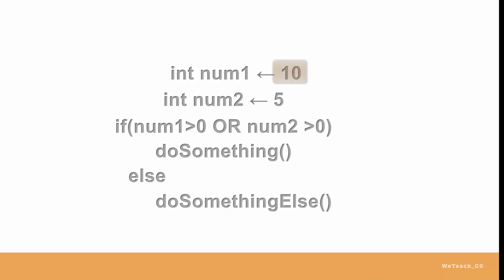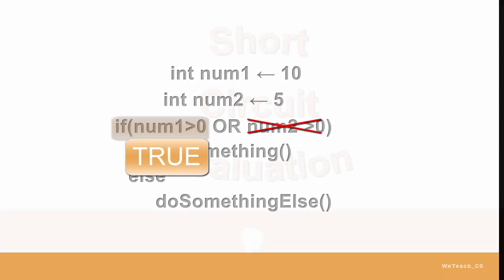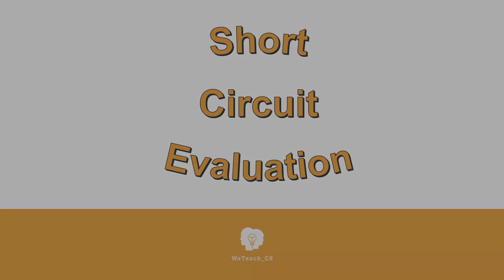Since NUM1 has a positive value, it causes the first part of the expression to be TRUE, and the second part need not be checked since OR requires only one of the two parts to be TRUE to get a TRUE result. Now you know about short circuit evaluation.